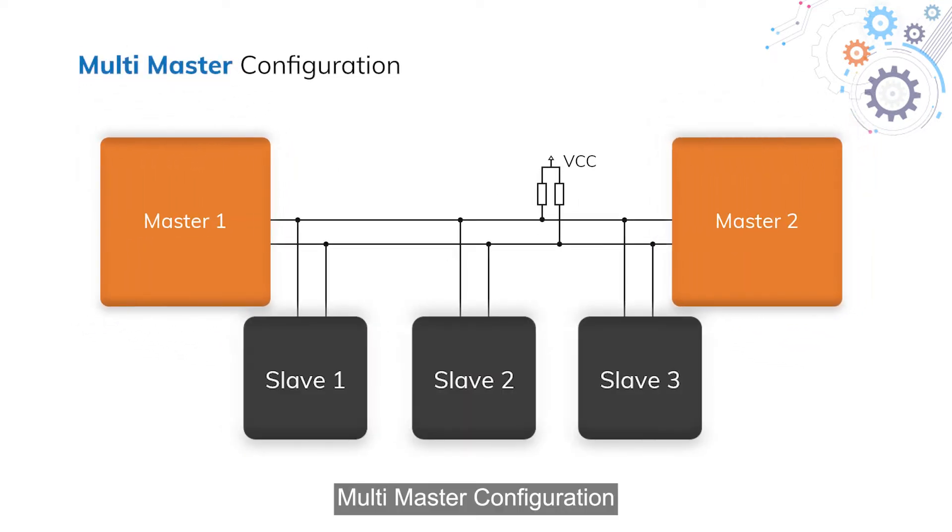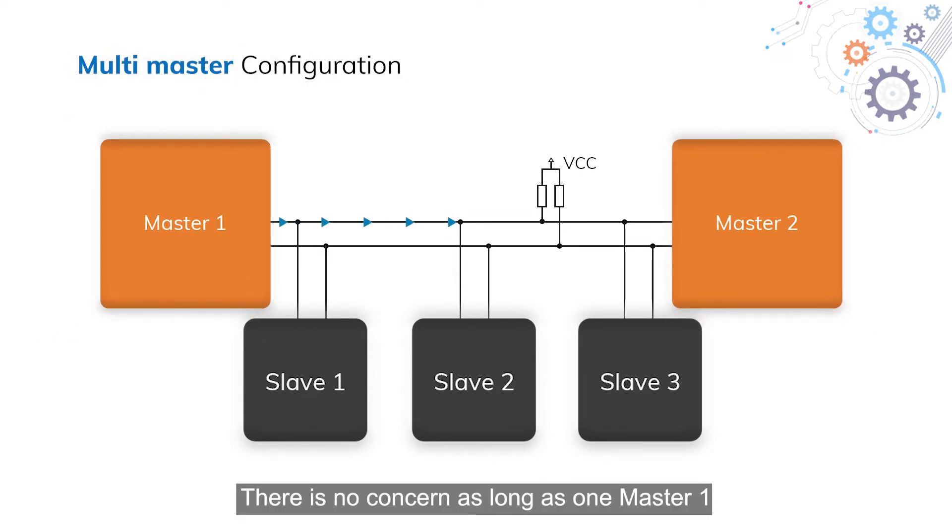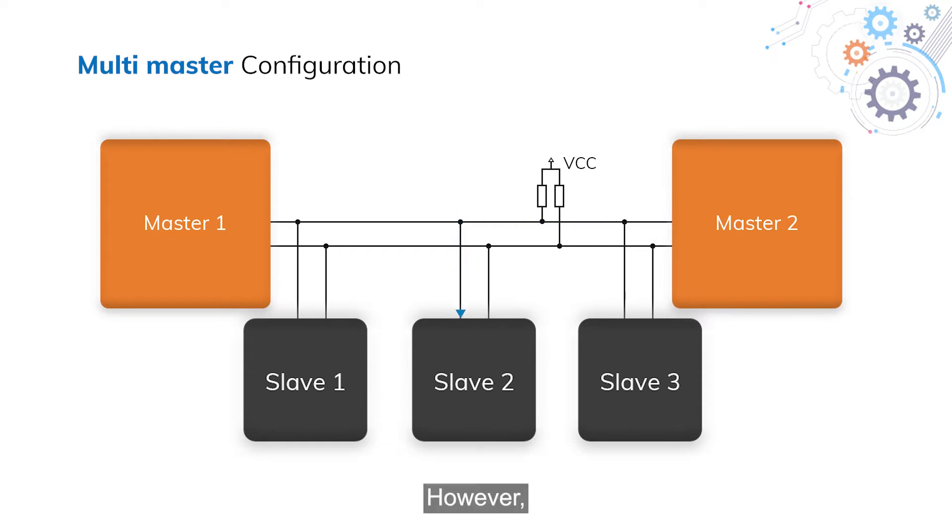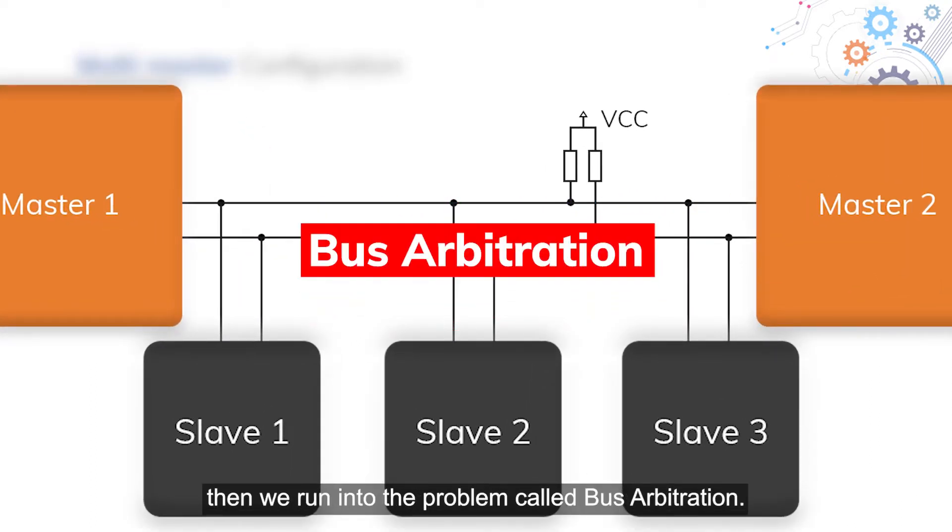Multi-master configuration: In this, there are two masters who can write into any of the slaves. There is no concern as long as master one completes the transaction, and master two later starts the next transaction. However, when both masters try to initiate the transaction at the same time, we run into the problem called bus arbitration.